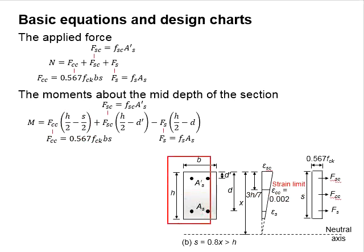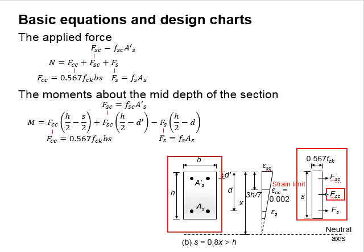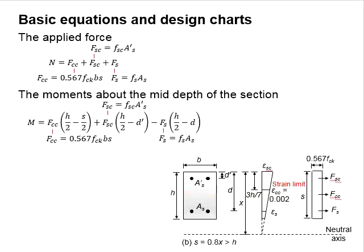For a column which is subjected to uniform compressive force, the center of the forces for the concrete under compression will be along the neutral axis of the section. With that, this will lead to zero moment.